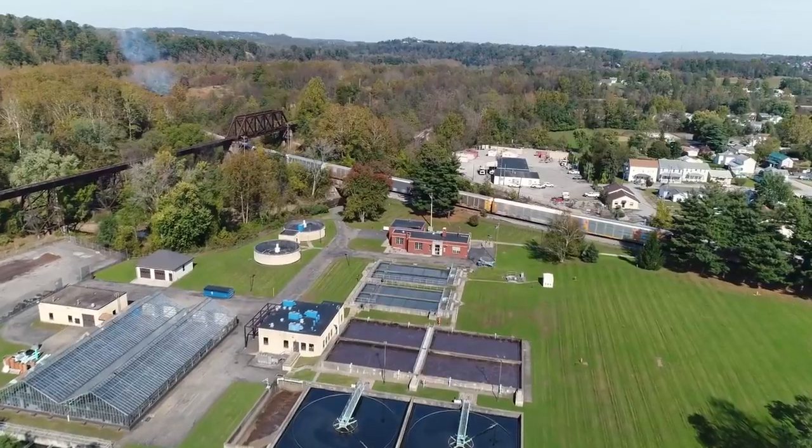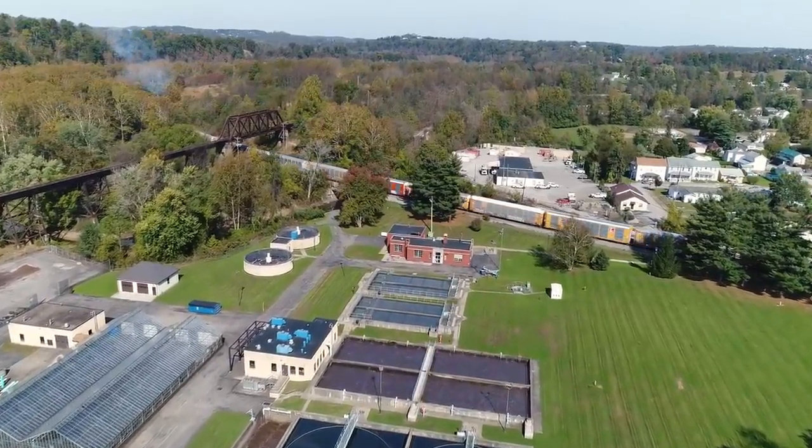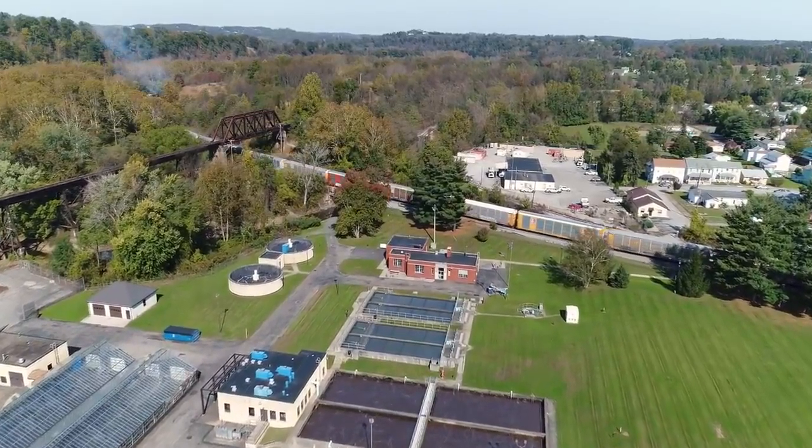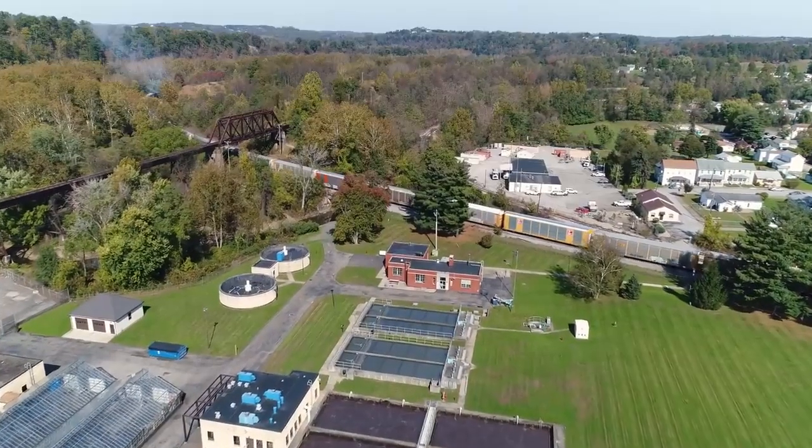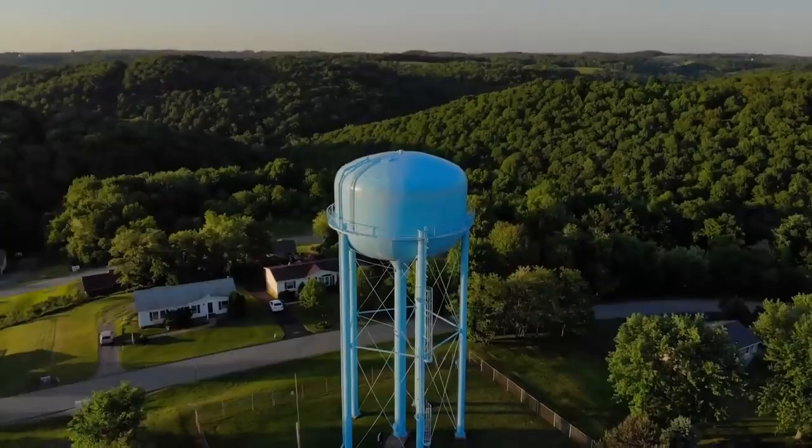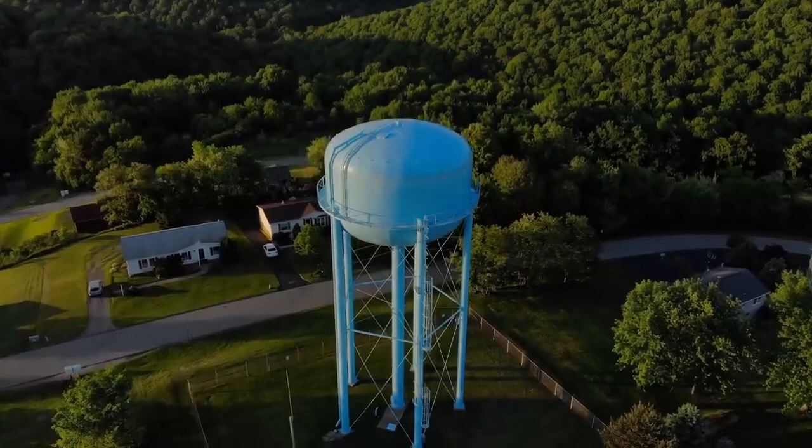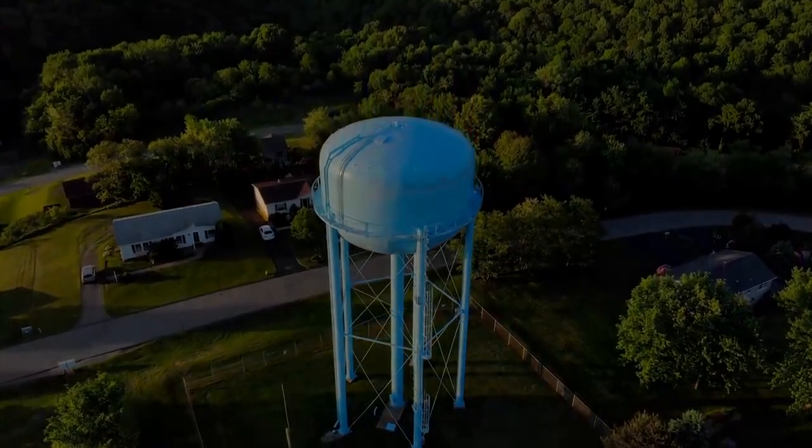So the job of finding enough water, making it safe to use, and then reliably distributing it to the system customers with almost no downtime is a monumental task that requires a lot of infrastructure. And probably the most visible component of a public water system is the elevated storage tank, also known as a water tower.